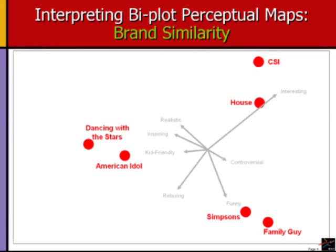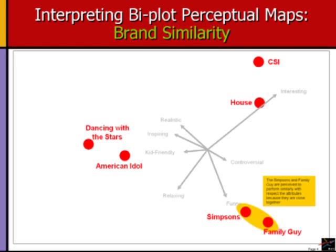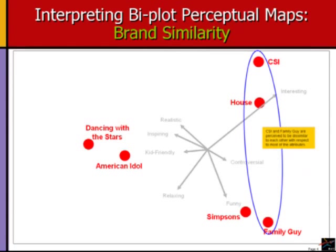The second interpretation is brand similarity. Brands which are closer together on the map are more similar to one another than brands further apart. In this example, the ratings of Family Guy on all the attributes are very similar to the ratings of Simpsons, and so the two brands are positioned close to one another. On the other hand, CSI and Family Guy are perceived to be fairly dissimilar to each other since they are far apart. Keeping in mind the directions of the attribute vectors, we can pinpoint where the distinctions exist. CSI and Family Guy are different mostly with regards to arrows that are parallel to the imaginary line that joins them, such as being funny versus realistic. Conversely, CSI and Family Guy are most similar on attributes that are perpendicular to the imaginary line between CSI and Family Guy, so they are extremely similar, i.e., the same distance out, on being kid-friendly.